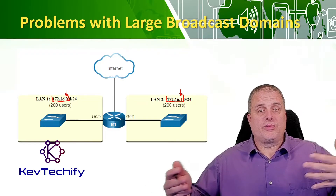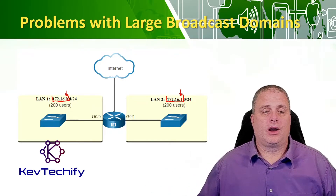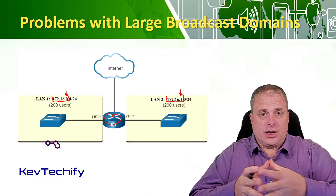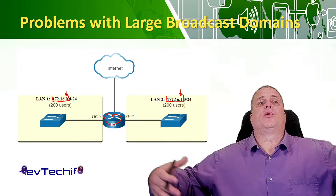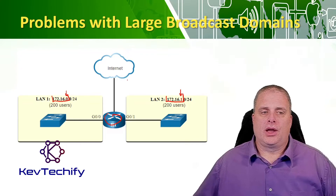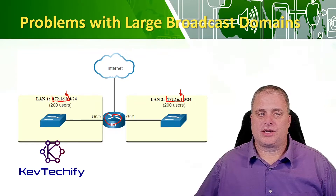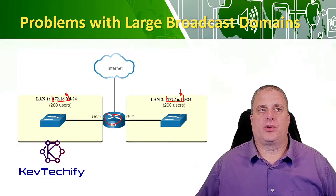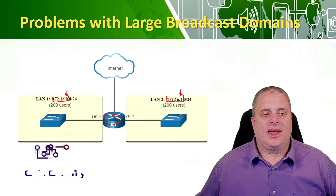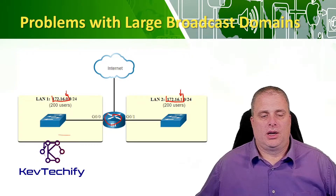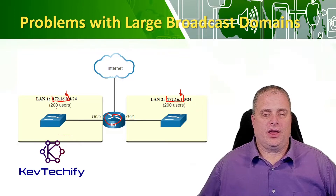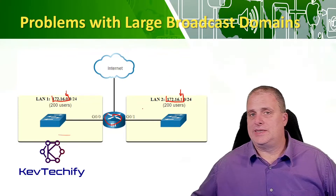Since they can't communicate directly, we have to put a router in there. We took our 400 users that were on one network and spread them out over two smaller networks. We still have the 172.16.0 network, but now we're breaking it up. Broadcasts are only propagated within that local network up to the router, so broadcasts from any of the 200 users on LAN 1 will not be heard by LAN 2.